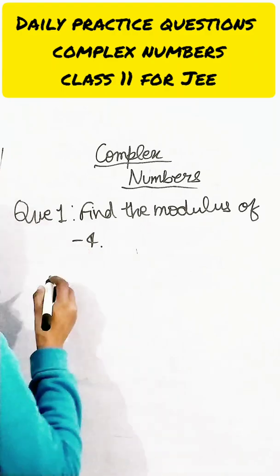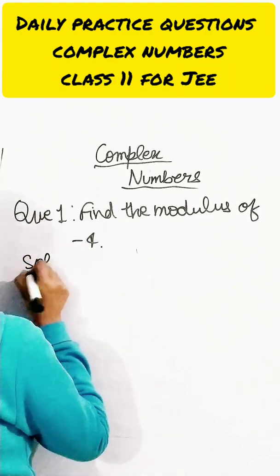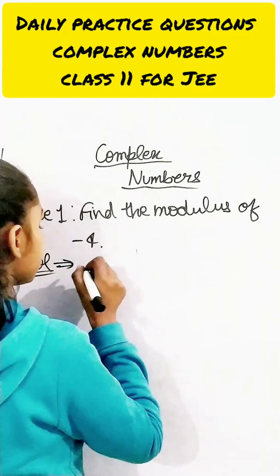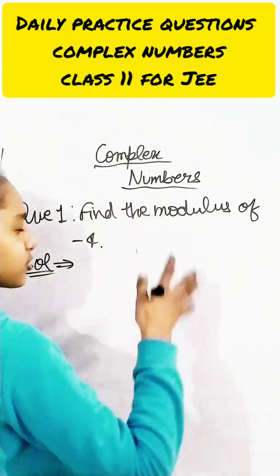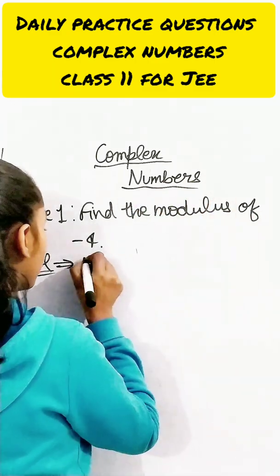Okay, so to find the modulus of negative 4, first of all, this is a complex number, right? Which means we're not having an imaginary unit - sorry, not the unit, I'm talking about the imaginary part.